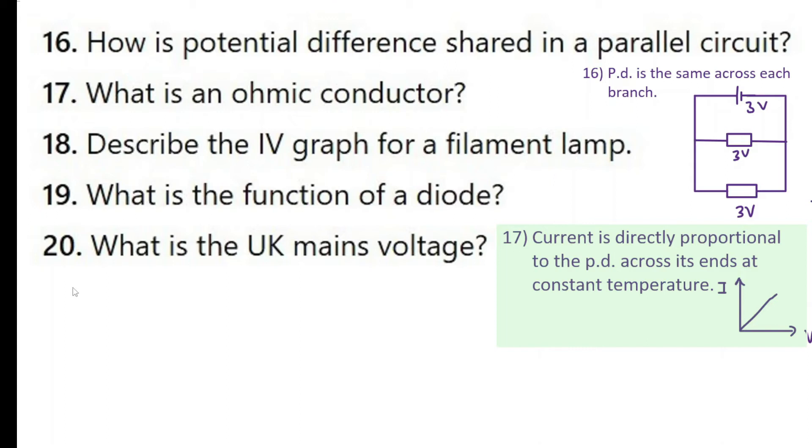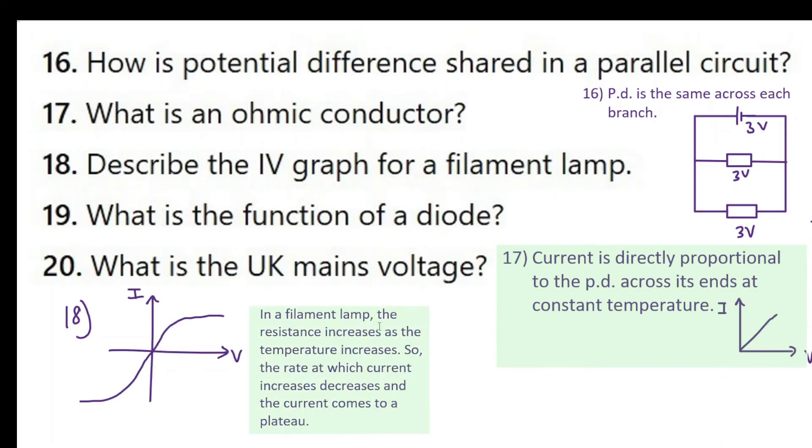Question number 18. Describe the IV graph for a filament lamp. So in a filament lamp the resistance increases as the temperature increases. Now when the resistance increases when you increase the voltage, the current does not increase how you would normally expect from Ohm's law, because filament lamps are non-ohmic. So what happens is the rate at which the current increases decreases. It's still increasing, but here it's increasing more, here it's increasing less, and eventually the current becomes constant.